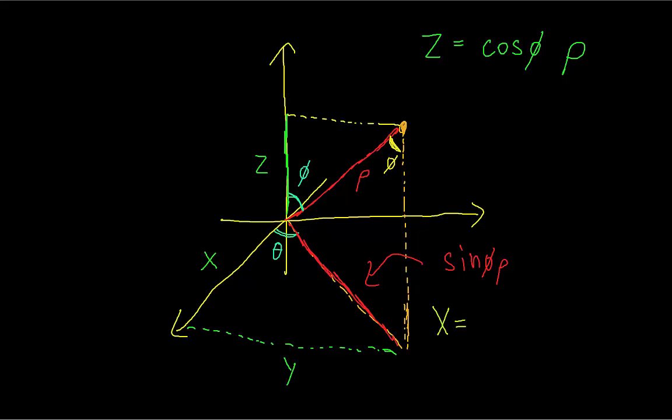And then once we have that, you can see that x is going to be that ur, rho sine phi, times cosine of theta. And then y is the same thing but with sine of theta instead.